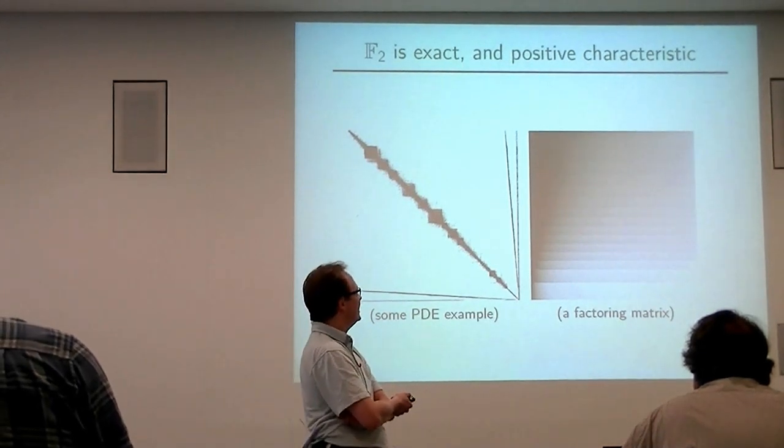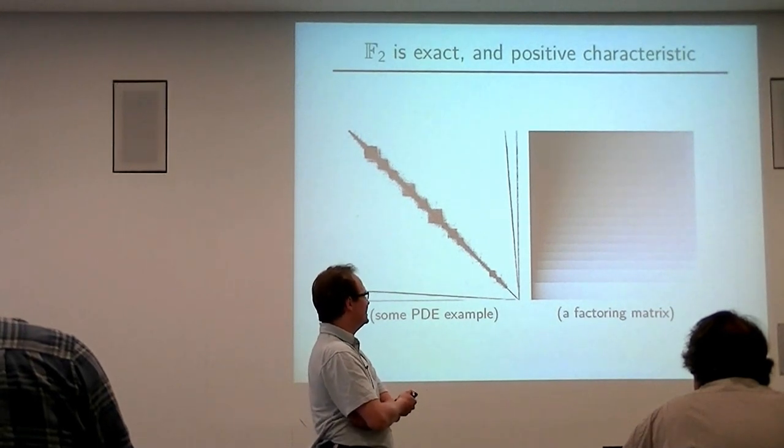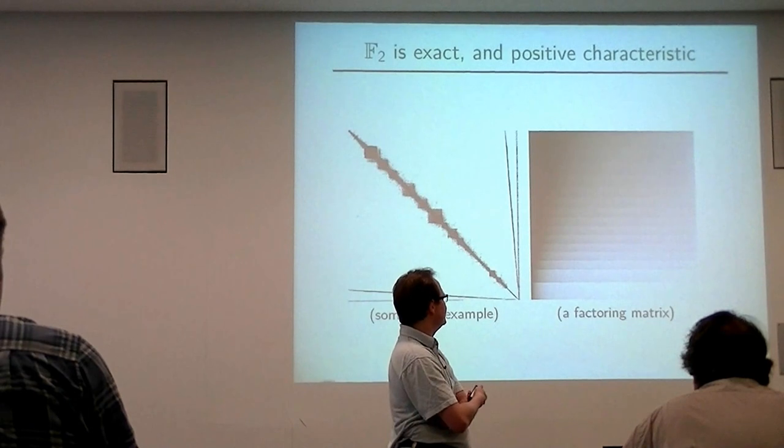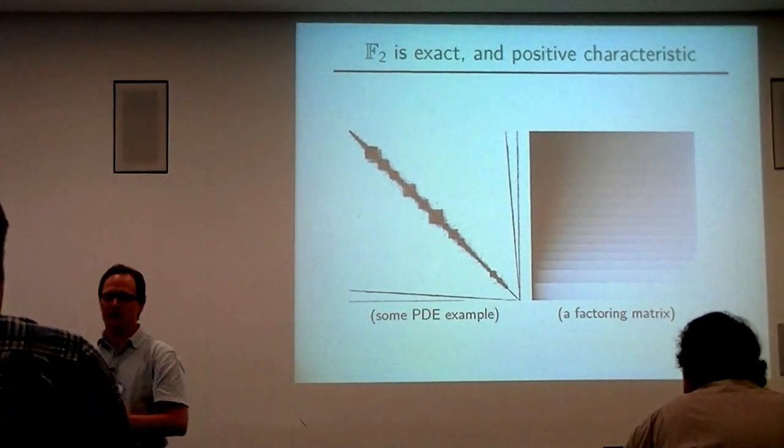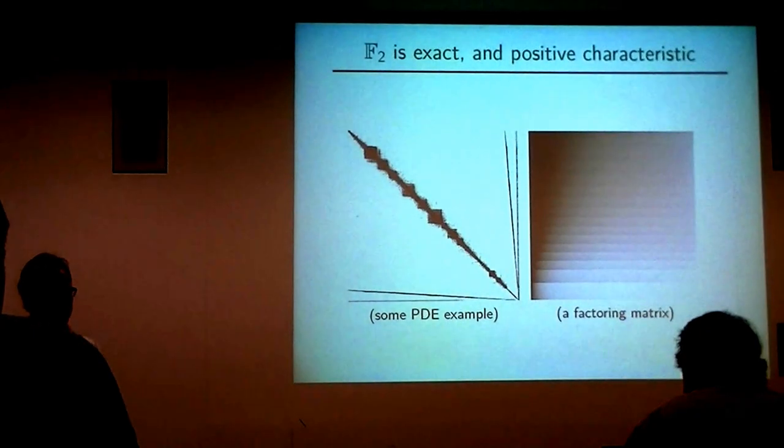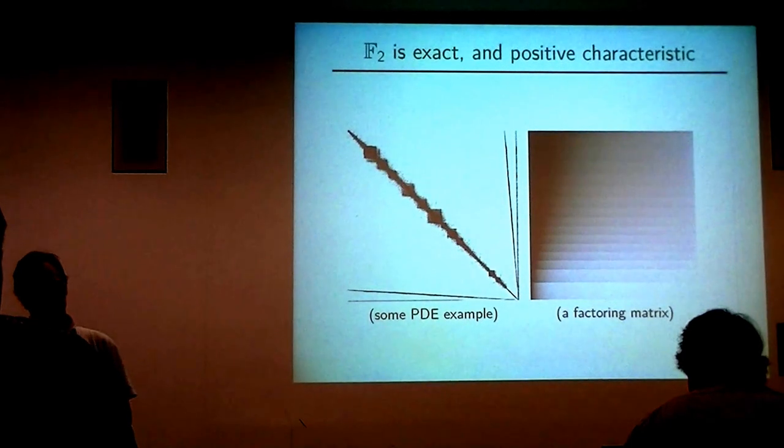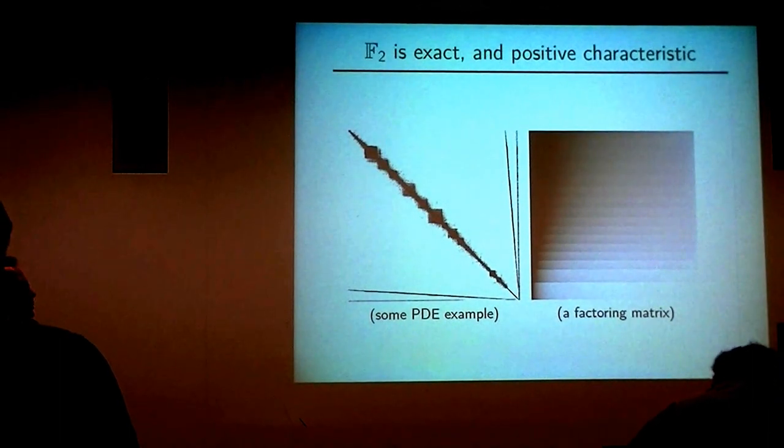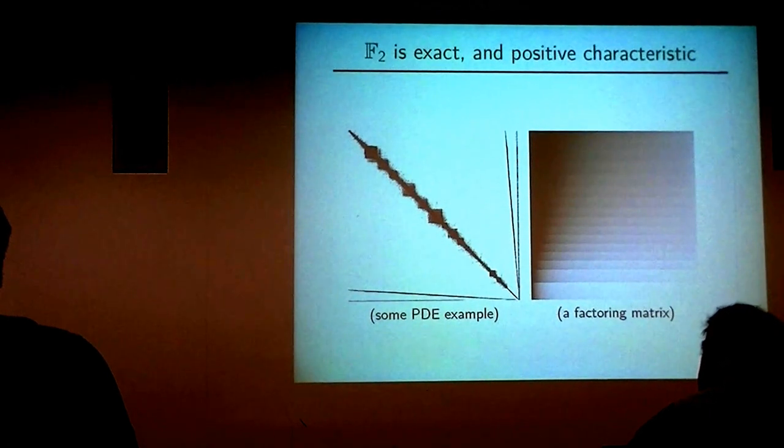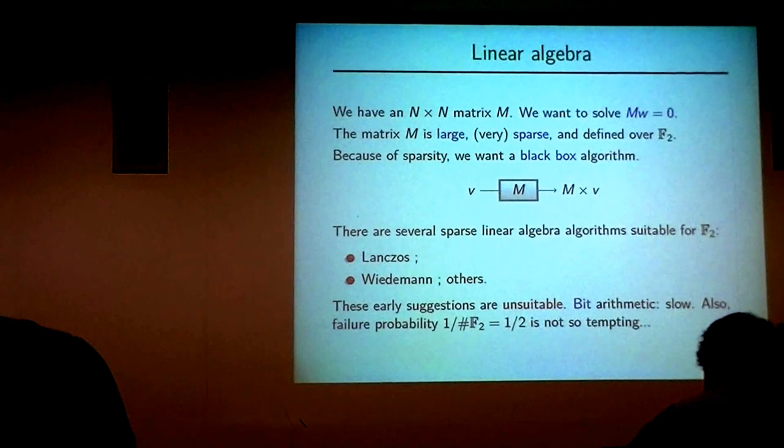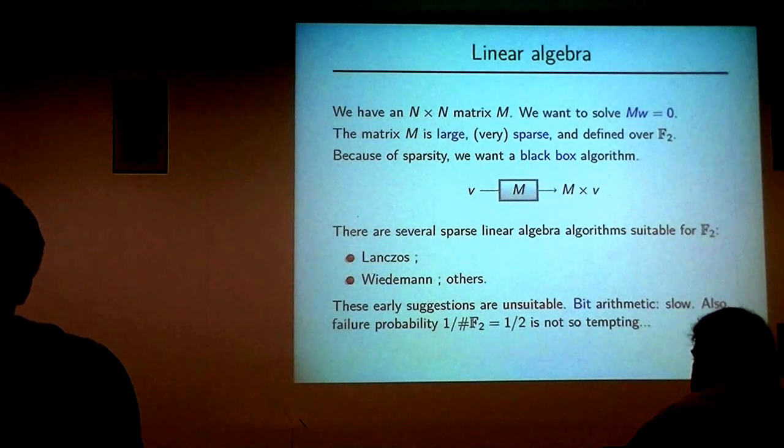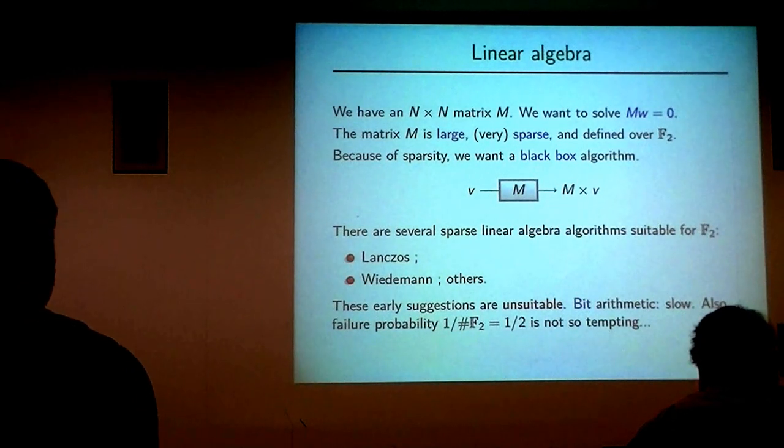This matrix is a view on the RSA 768 linear system. It's a 2,000 by 2,000 picture, and every pixel represents a 100,000 times 100,000 block. The gray level denotes the number of nonzero coefficients in there. An average of this matrix, which has 200 million rows and columns, has 140 nonzero coefficients per row. So by sparse here, I mean it. How long did it take to make that picture? The file is 100 gigabytes. It's exactly the time it takes to read the file. It depends on your hard drive.